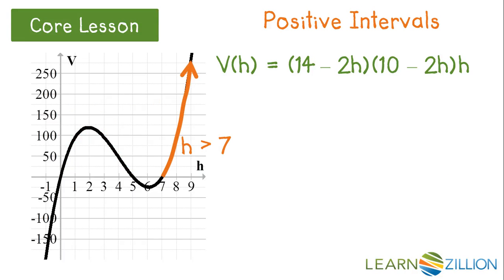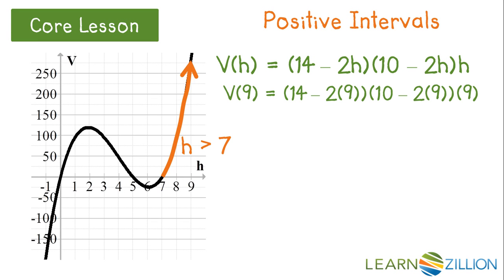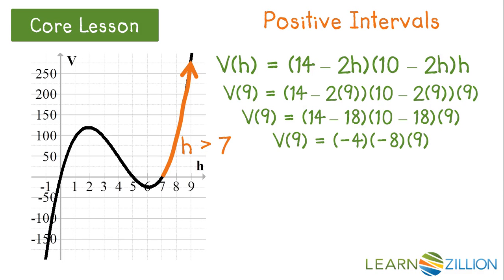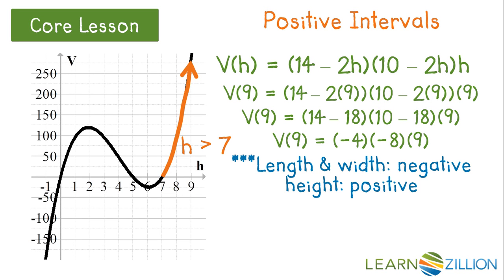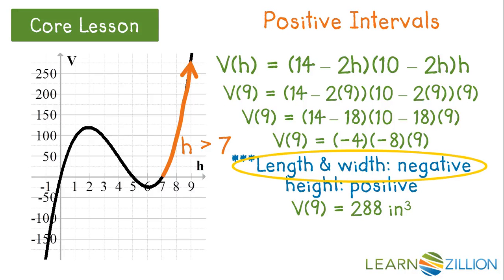Now let's look at our second positive interval for all heights greater than 7. Let's select a height greater than 7, such as 9, and plug it into our function. If we follow our order of operations, we get volume at a height of 9 inches is equal to the quantity of (14 minus 18) times the quantity of (10 minus 18) times 9, which equals negative 4 times negative 8 times 9. Notice that in this case, length and width are both negative while height is positive. We get that volume at a height of 9 inches is 288 inches cubed. While our volume did come out positive, our length and width were negative. This means that we cannot use any heights greater than 7, because we cannot have length and width that are negative — this is physically impossible.